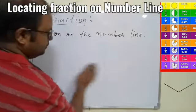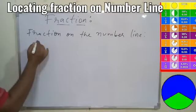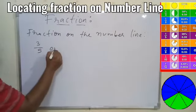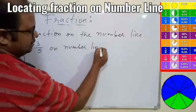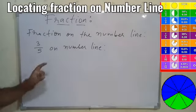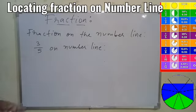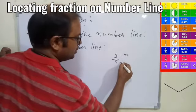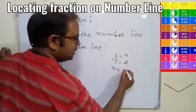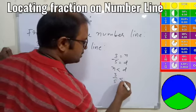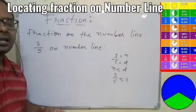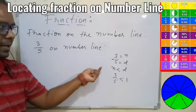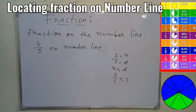We've done 1/3. Now let's go for 3/5 on the number line. Again we need to find out between which two numbers 3/5 lies. Your numerator is 3 and denominator is 5 — numerator is less than denominator, so 3/5 must be less than 1. This number is also between 0 and 1.